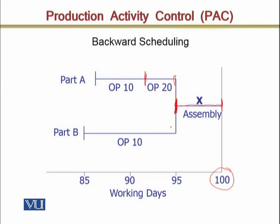If X starts on the 95th day, then Part A's operation 20 must be complete by the 95th day. Operation 20 takes 3 days, so operation 20 should start on the 92nd day. Since operation 10 takes 5 days, operation 10 for Part A should start on the 87th day.